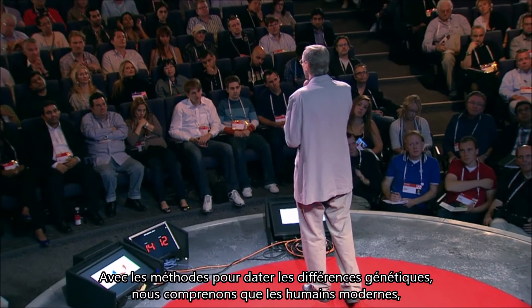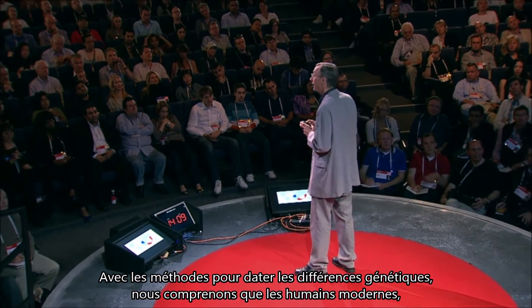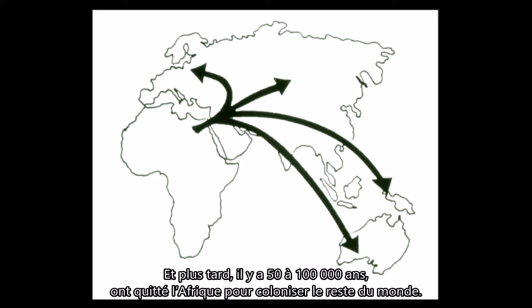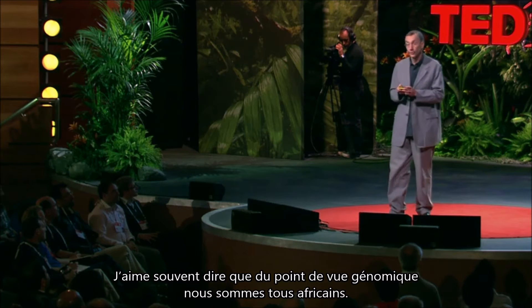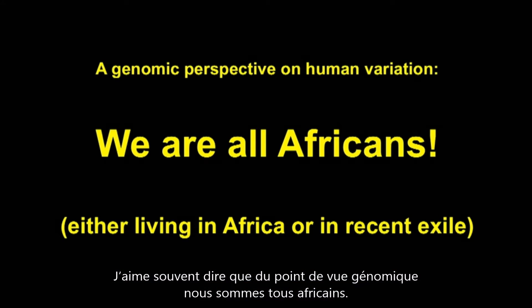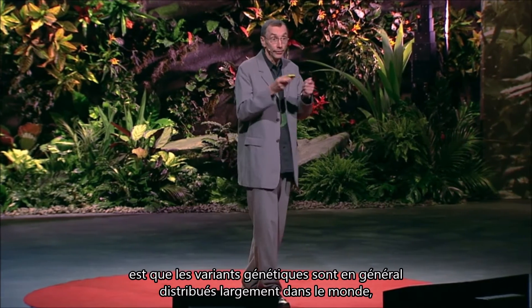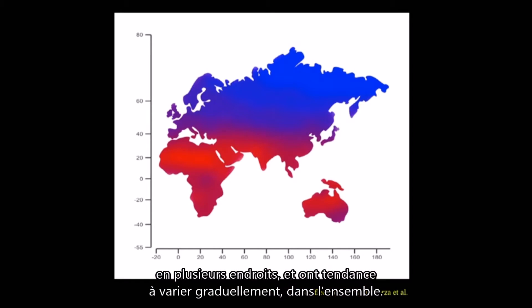Together with methods to date these genetic differences, this has led to the insight that modern humans — humans essentially indistinguishable from you and me — evolved in Africa quite recently, between 100,000 and 200,000 years ago. And later, between 100,000 and 50,000 years ago or so, they went out of Africa to colonize the rest of the world. So from a genomic perspective, we are all Africans — we either live inside Africa today or in quite recent exile. Another consequence of this recent origin is that genetic variants are generally distributed widely in the world and tend to vary as gradients from a bird's-eye perspective.